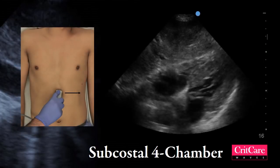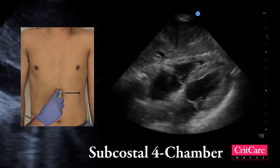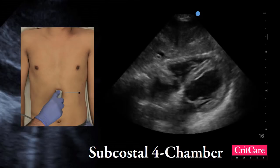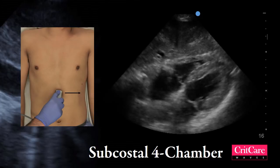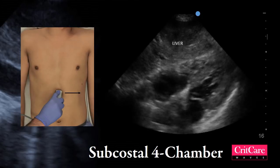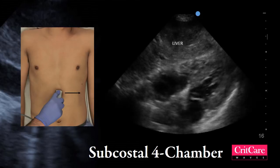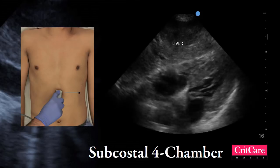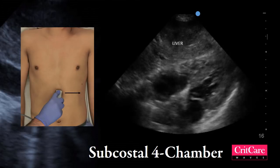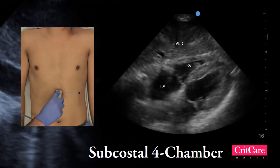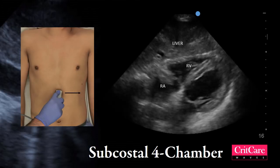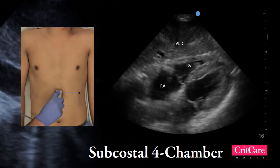A subcostal 4-chamber view is shown in the video. This homogenous echotexture is the liver. Since this is a vascular organ, the heart is visualized through the liver well. The two structures closest to the liver are the right heart structures — the right ventricle and the right atrium. The tricuspid valve can be seen between the right atrium and ventricle.